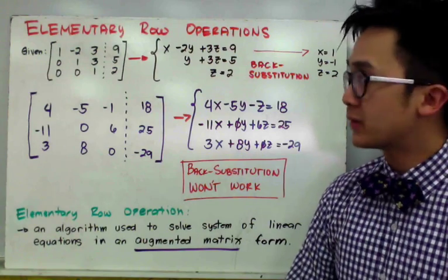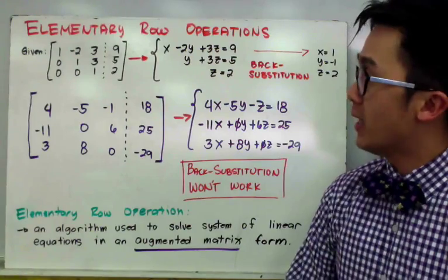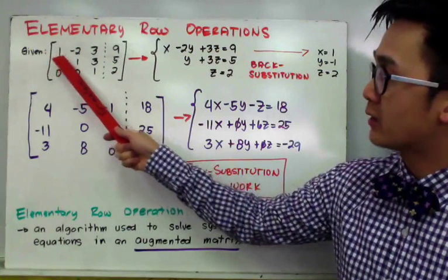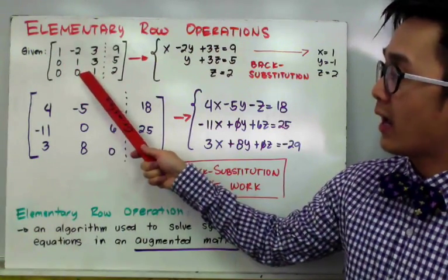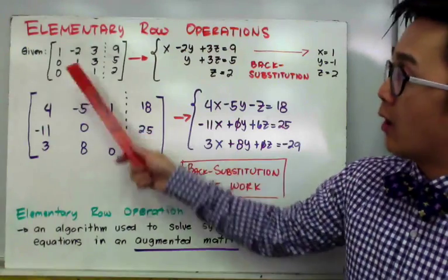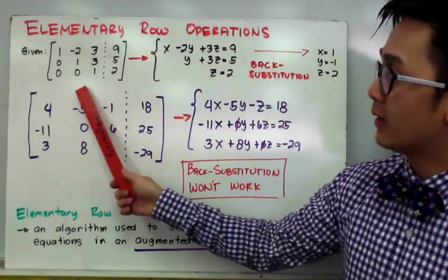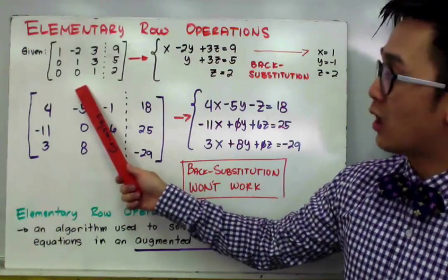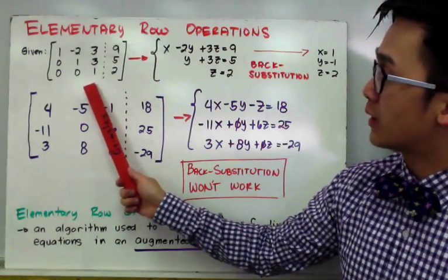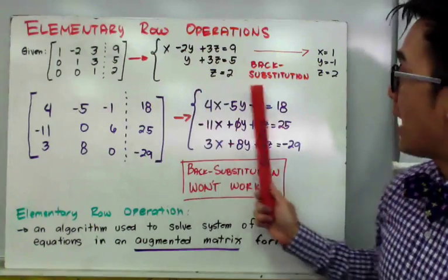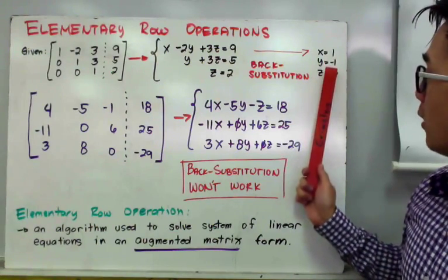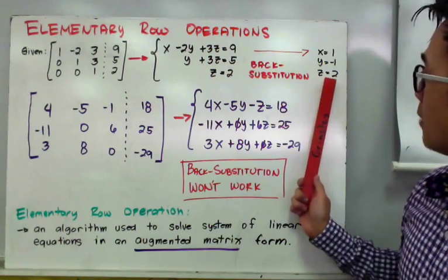One of the many applications of matrices in linear algebra is solving linear systems. In this augmented matrix example, the main diagonal is already 1, 1, 1, and the corresponding numbers under the main diagonal are all 0. When this matrix is given, solving a linear system using back substitution is easy — we can find x = 1, y = -1, and z = 2.